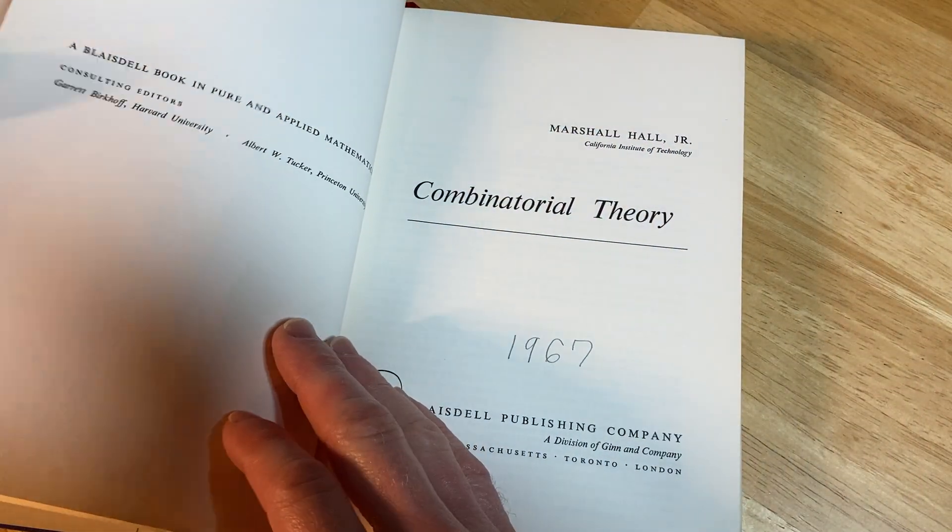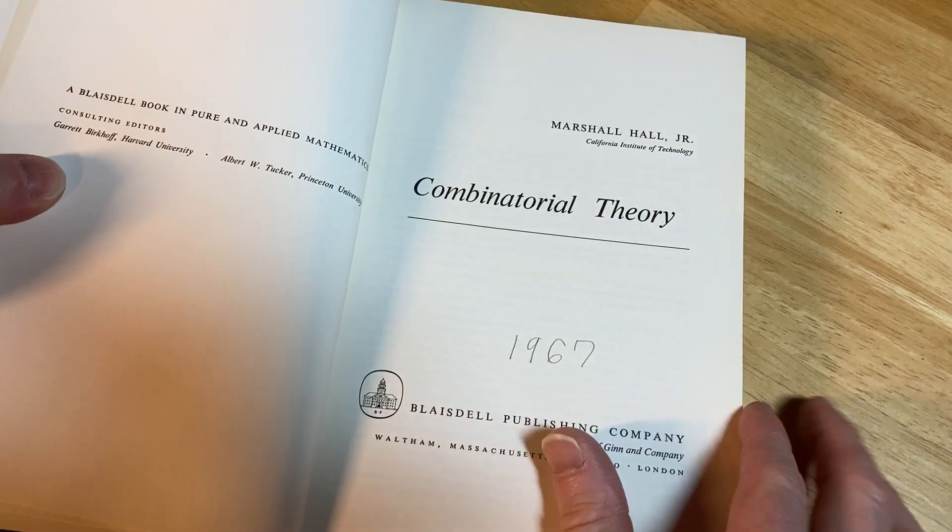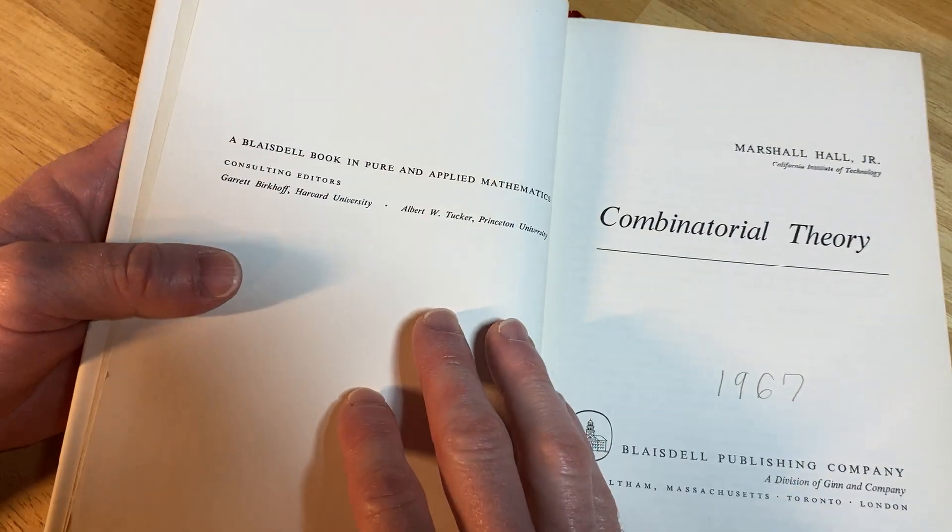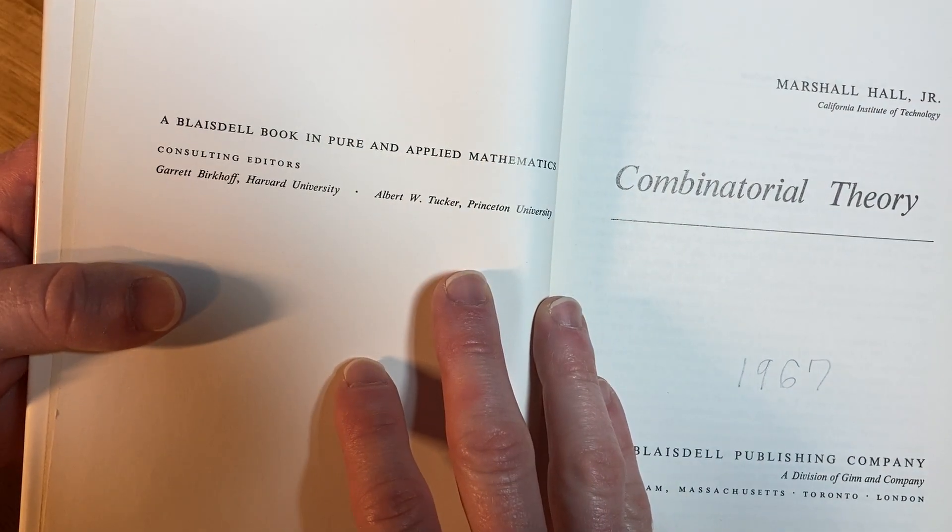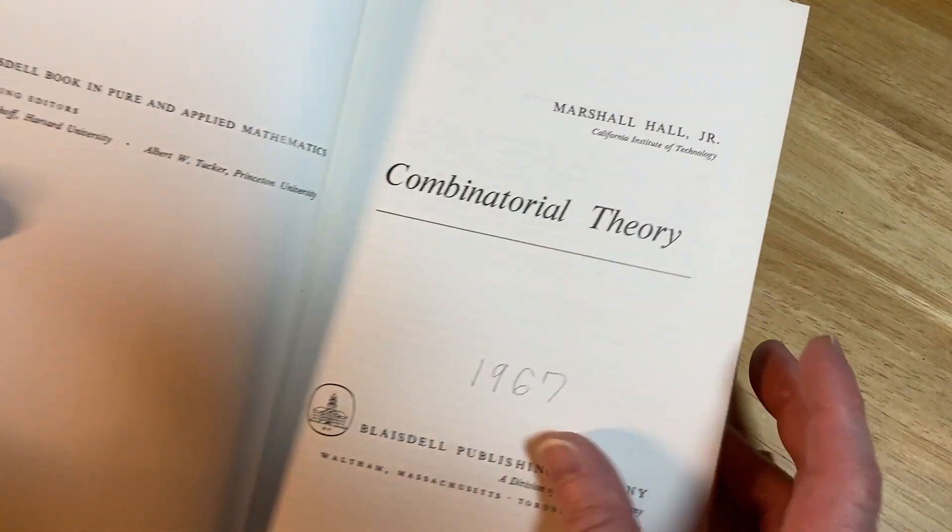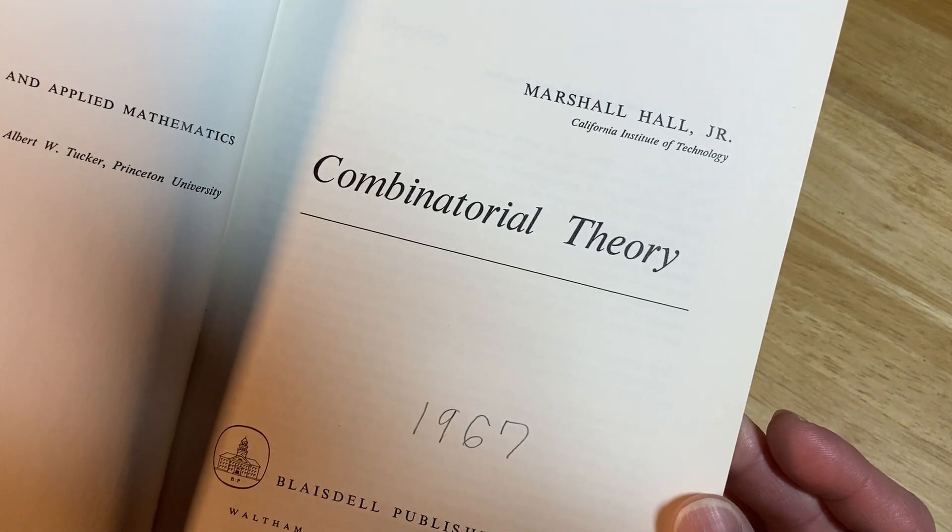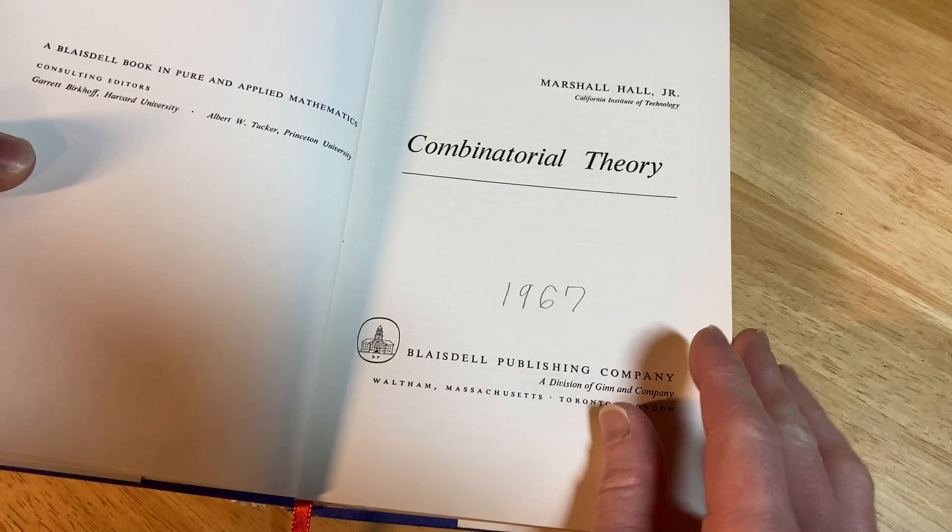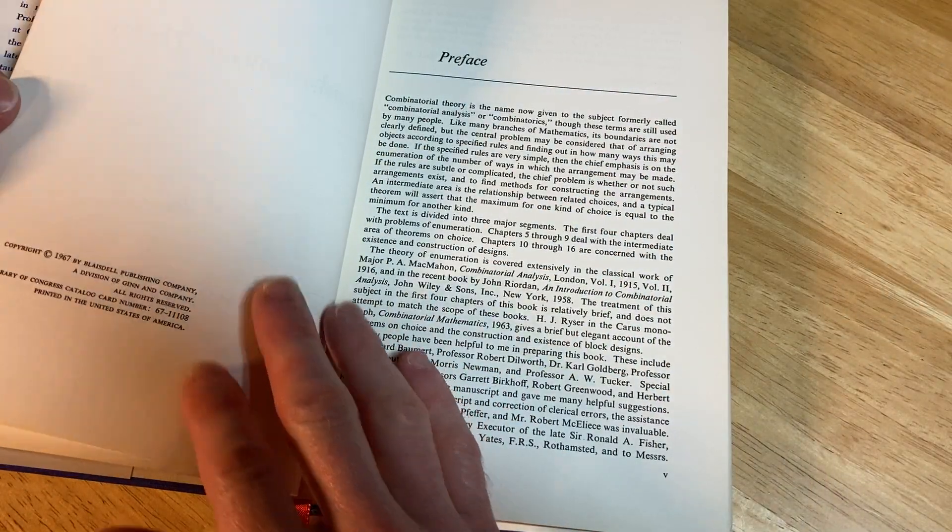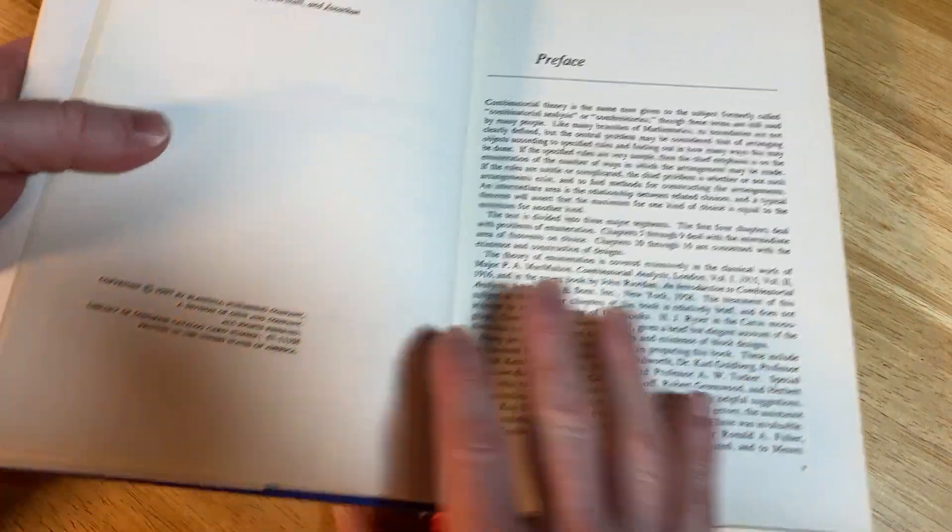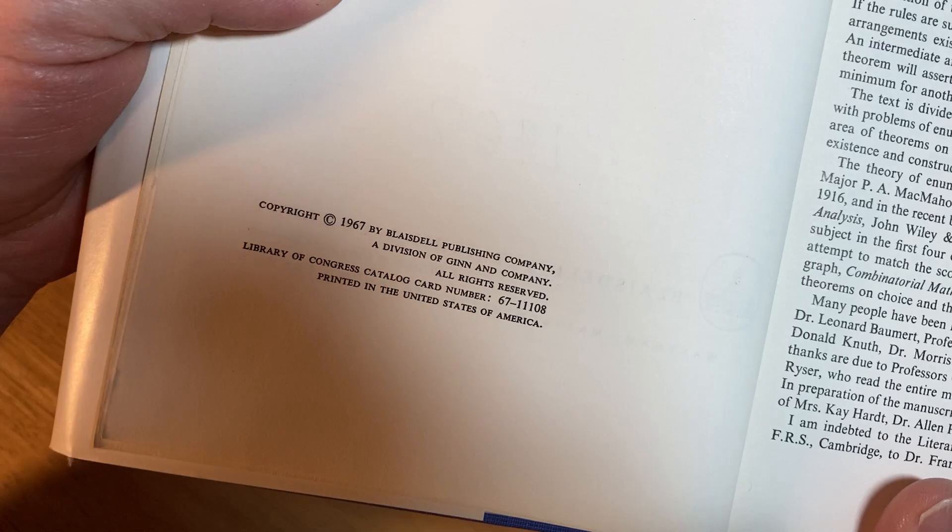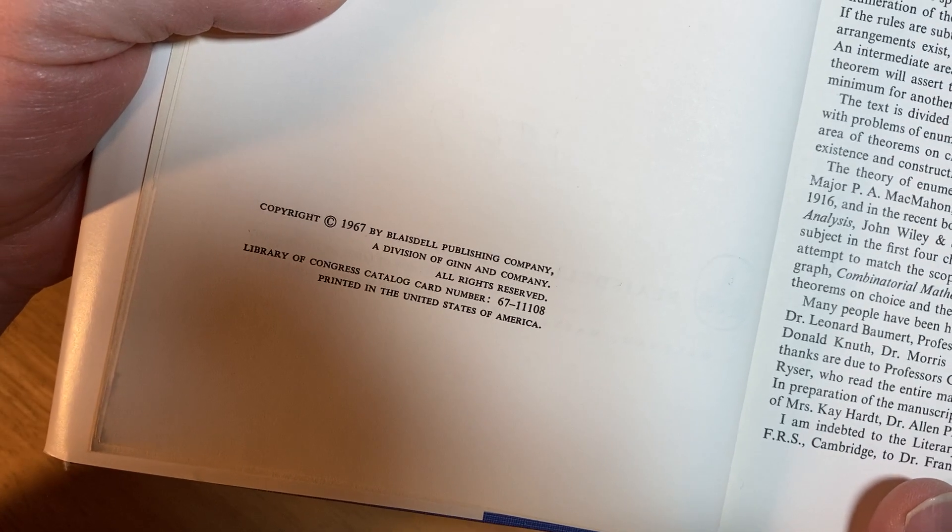Combinatorial Theory. And then someone just wrote 1967 right there. A Blaisdell book in pure and applied mathematics. Marshall Hall Jr., California Institute of Technology. And then here's the copyright, 1967. This must be the first printing.